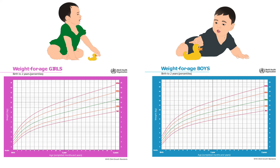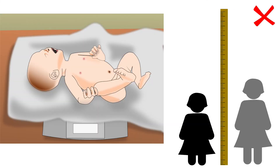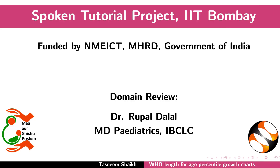The second percentile growth chart is called the weight for age growth chart, which is discussed in another tutorial in the same series. Growth problems are also discussed in that tutorial. Please visit our website for more details. This brings us to the end of this tutorial. Thank you for joining.